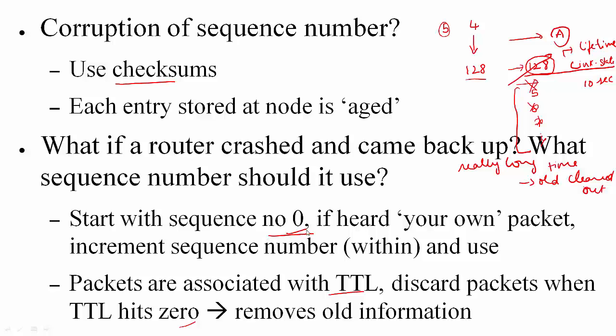One optimization this node can potentially do is if this node were to hear its own packet, this corresponding to this older information, it can look at the sequence number and it can increment the sequence number within this packet and reuse it. So in other words, it starts out with 0, but if it were to hear some old information of itself, it is going to look at the sequence number and it will increment that sequence number and start using this.